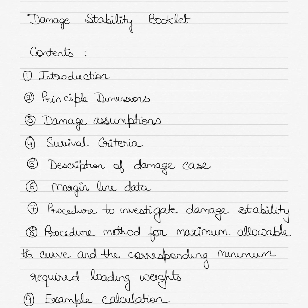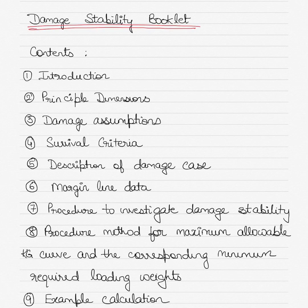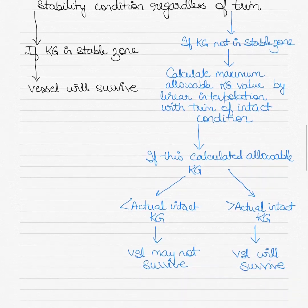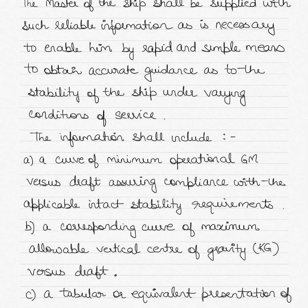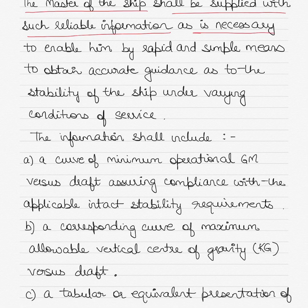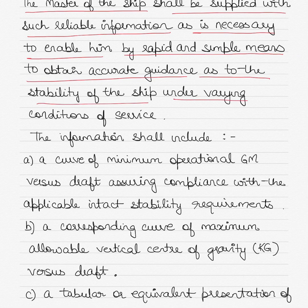Today I'm going to be talking about two things: the first one is a damage stability booklet, and the other is damage control plans. The notes are written in a slightly odd order, so let me take you through the damage stability booklet first and then damage control plans. The damage stability booklet is provided to the master of the ship, who is supplied with reliable information necessary to enable him or her, by rapid and simple means, to obtain accurate guidance as to the stability of the ship under varying conditions of service.